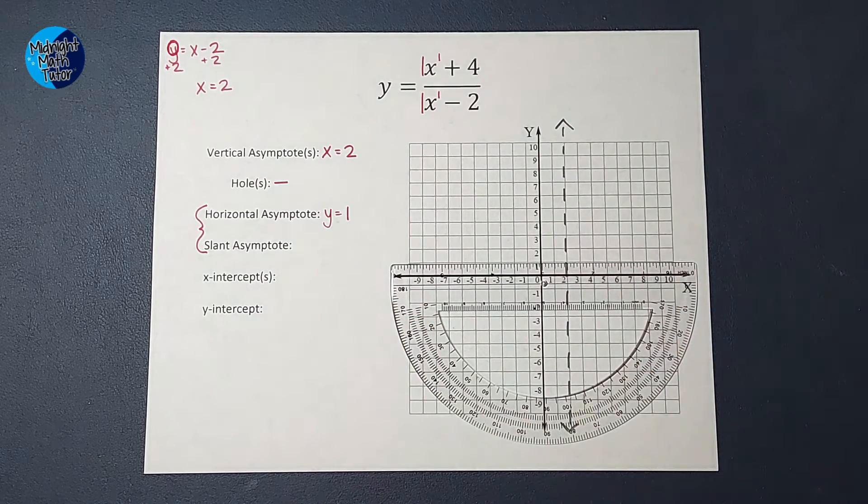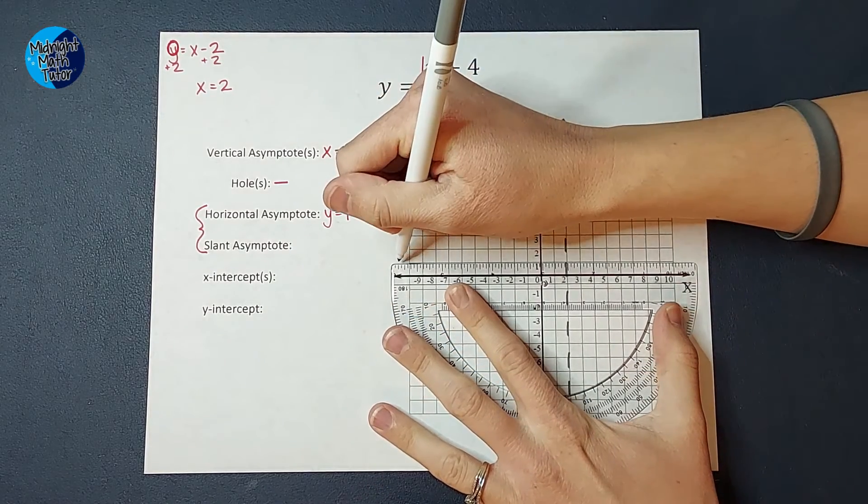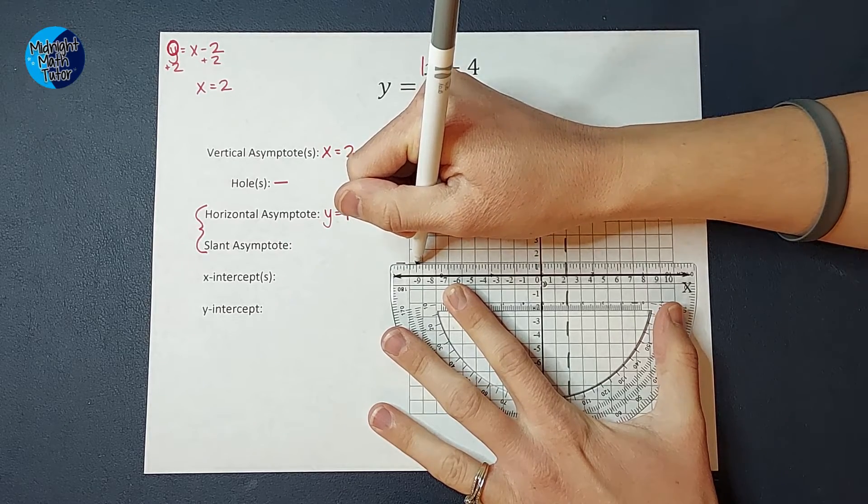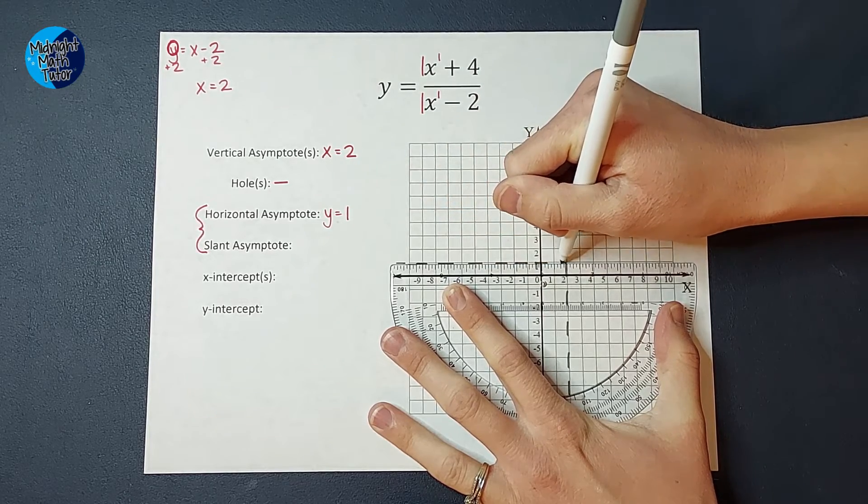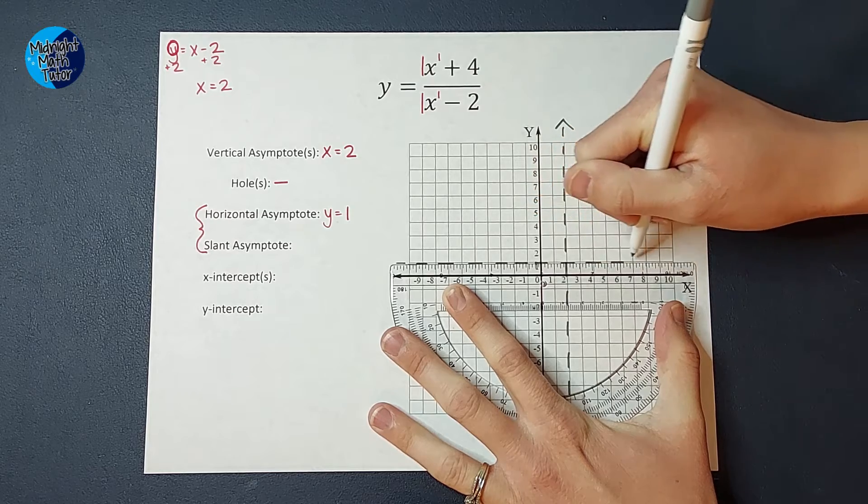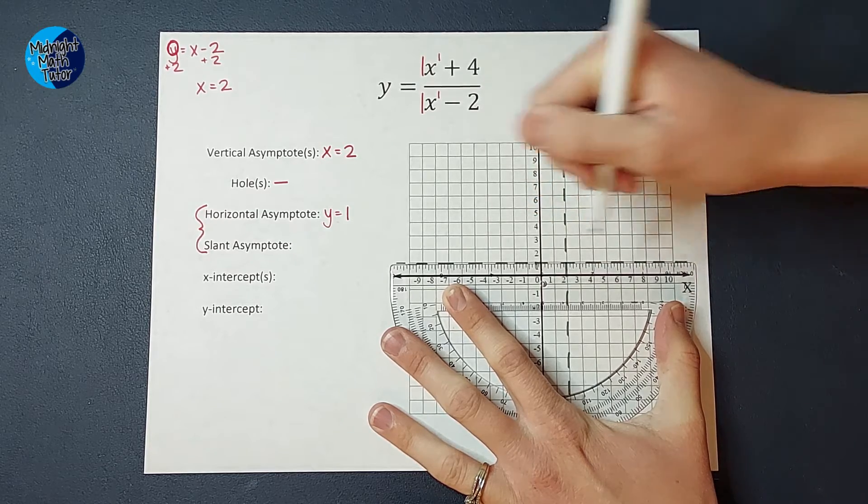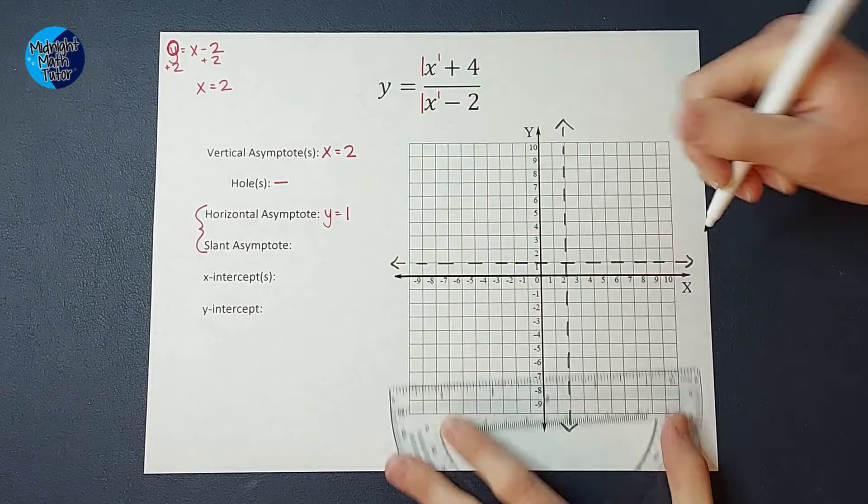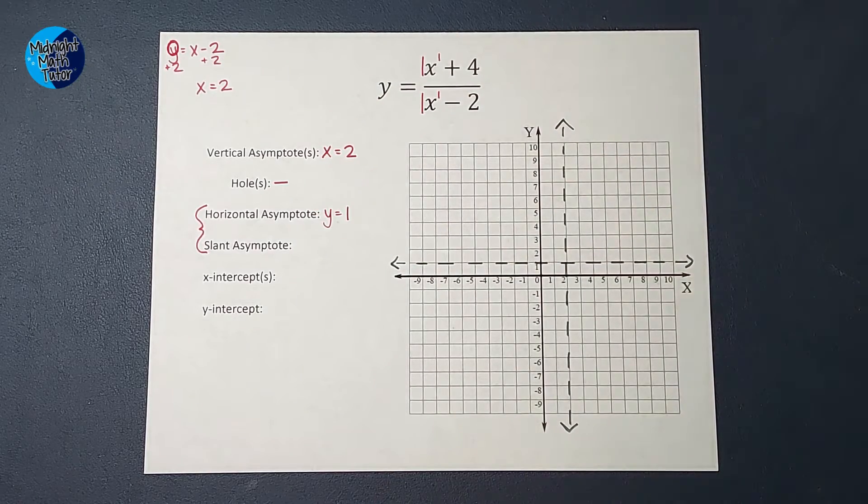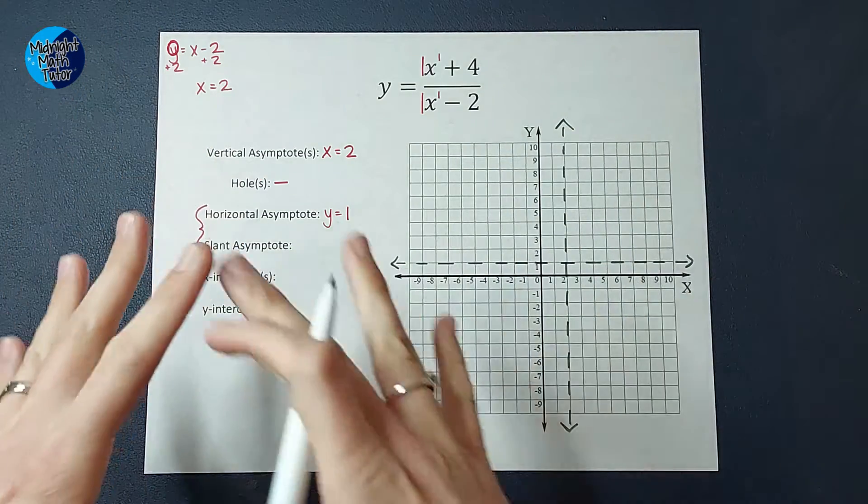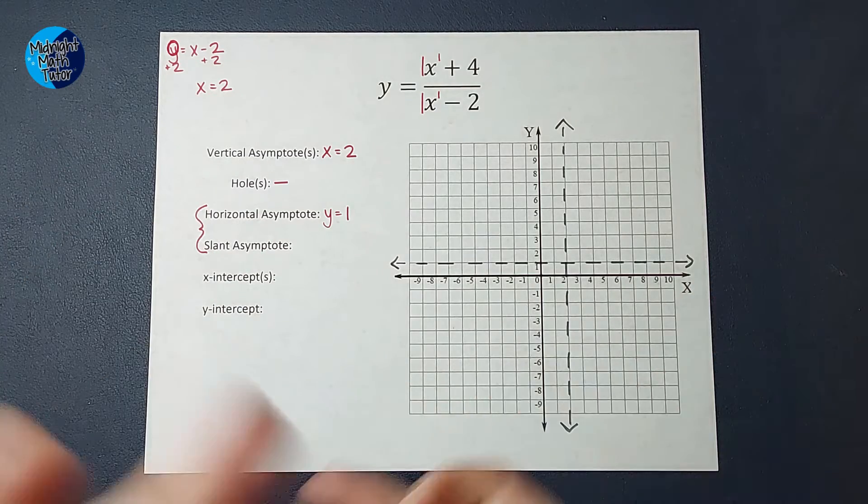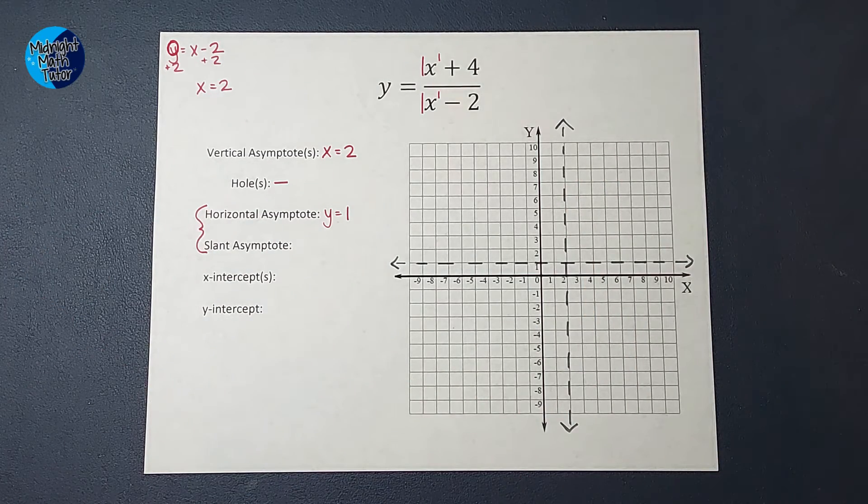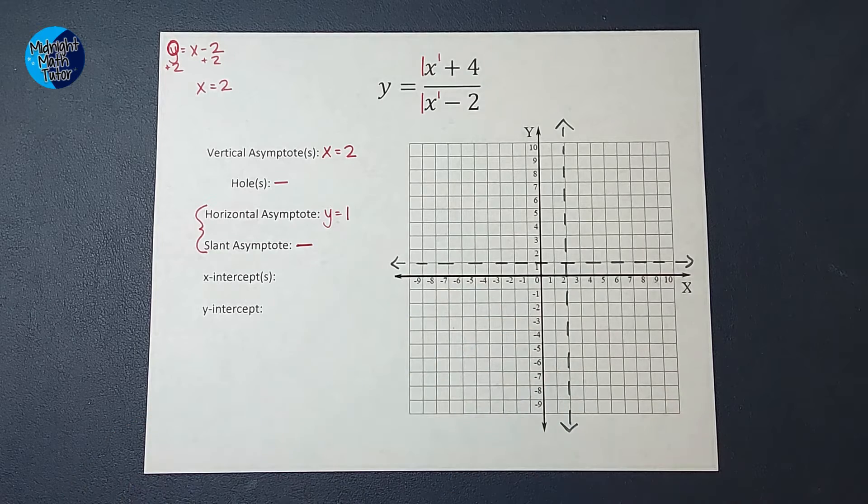Now, fun fact about horizontal and slant asymptotes, they can be crossed. Vertical asymptotes, absolutely not, but horizontal and slant asymptotes can be crossed. Now if you're thinking, why? Why do we even have them if they can be crossed? I'm not going to lie, I kind of wish they had a different name. They can be crossed, but they still help us understand the shape of our graph. An asymptote is really what our graph is approaching, so it still helps us understand what our graph looks like. Since I had a horizontal asymptote, there is not a slant asymptote.